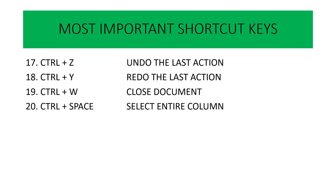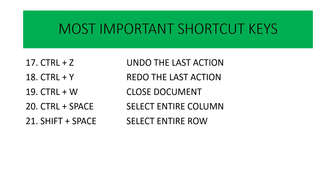Ctrl + Space — किसी भी entire column को select करने के लिए, जैसे column A, B, C — उसको select करने के लिए Ctrl + Space का use कर सकते हैं. Shift + Space — Shift + Space is used to select a particular entire row. कोई भी entire row को select करने के लिए Shift + Space का use करते हैं.